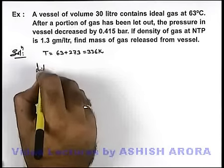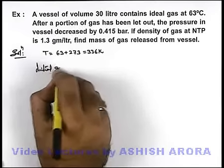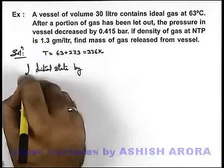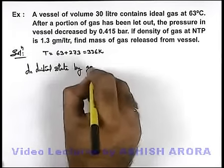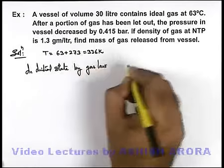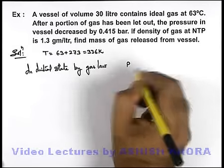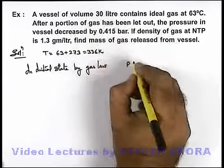In initial state, by gas law, we can write: if initial pressure was P, volume is given as 30 liter, we can write as 30 times 10 to power minus 3 in meter cube.